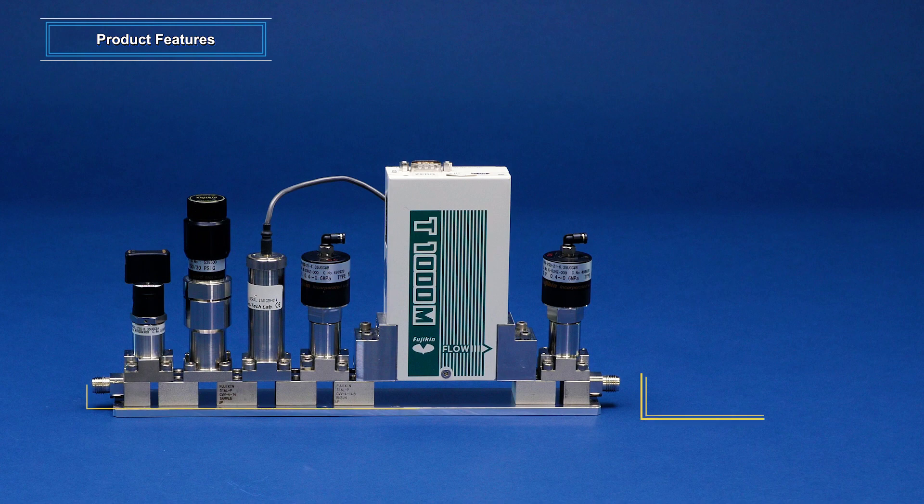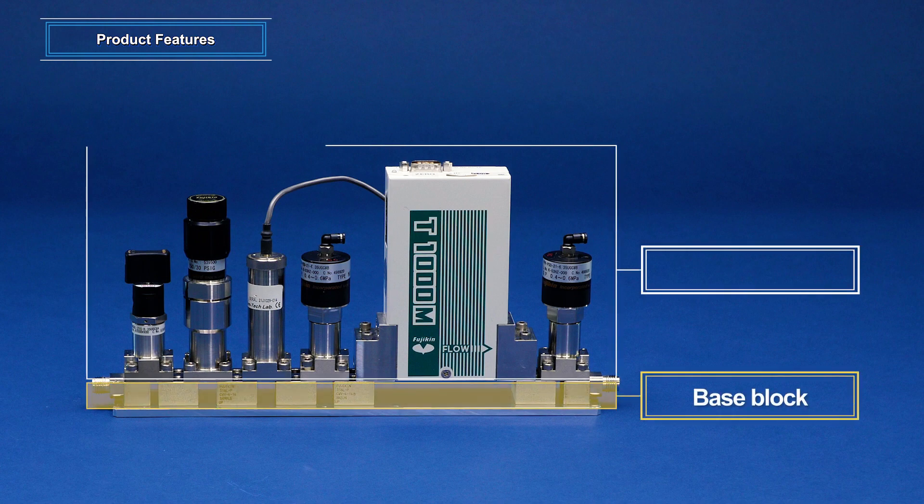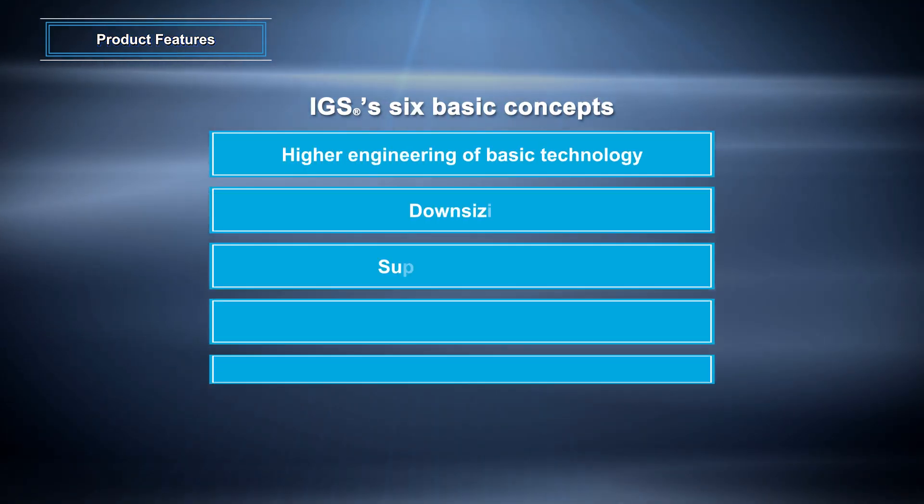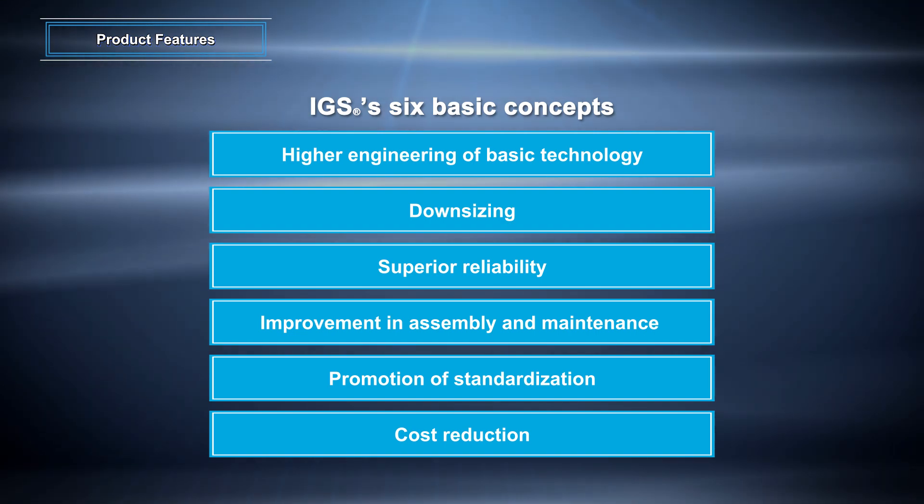An IGS consists of a base block on a plate and top components and is designed based on six basic concepts. We are now introducing the six IGS concepts.